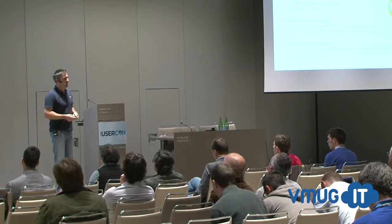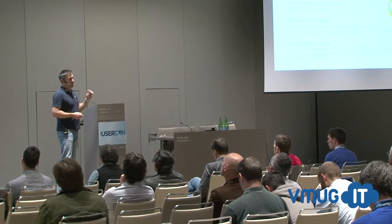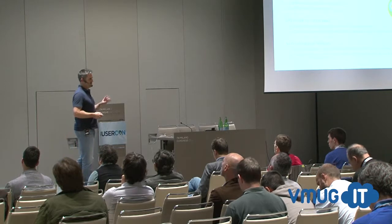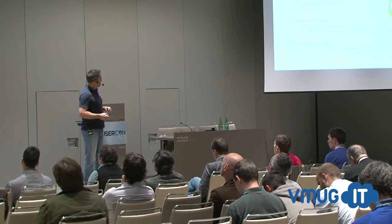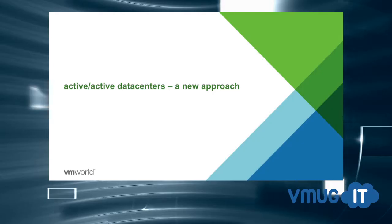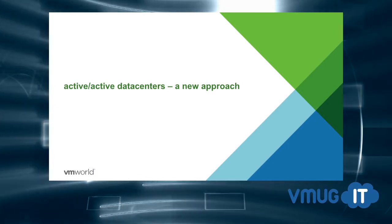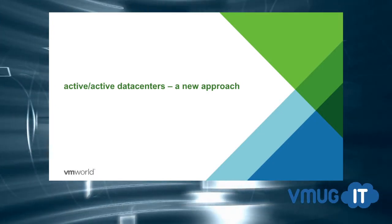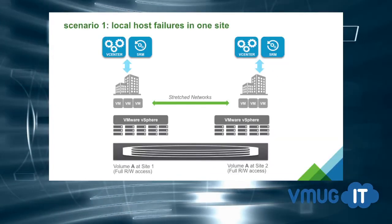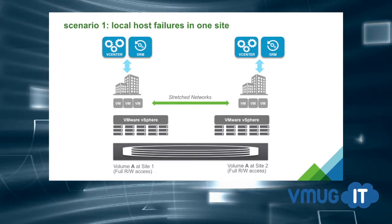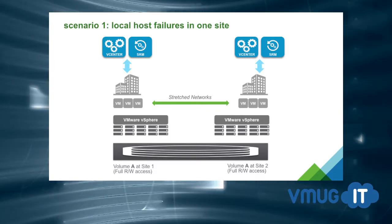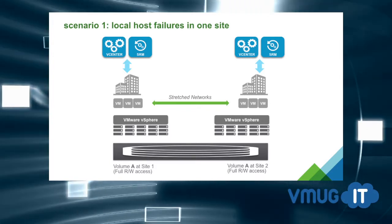We can do that with SRM — we can allow large-scale storage migrations and vMotions with this toolset. This gives us a new way of doing things: an active-active site with stretch networks and stretch storage, where the stretch storage provides read-write access at both sites for the datastore. Let's look at three quick examples starting with an HA failure.